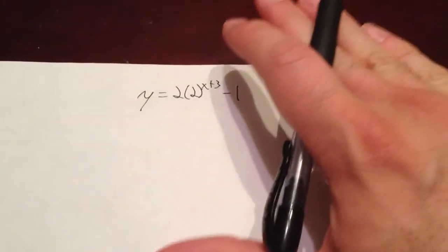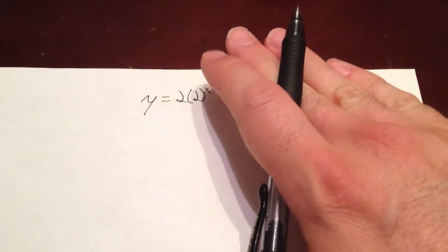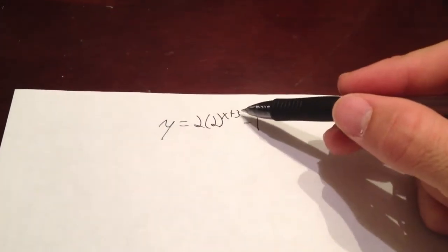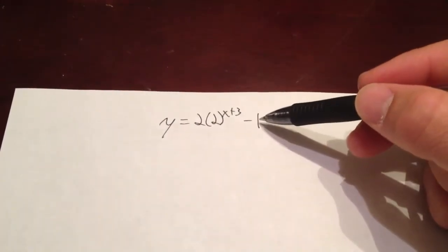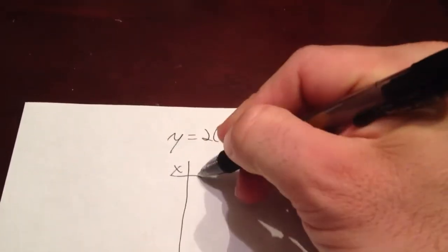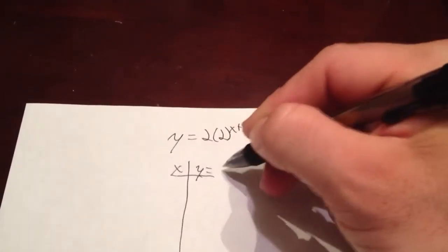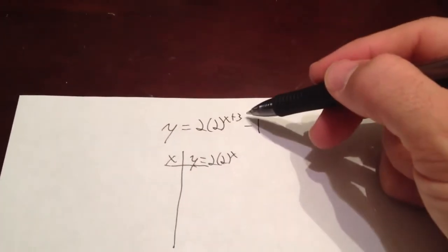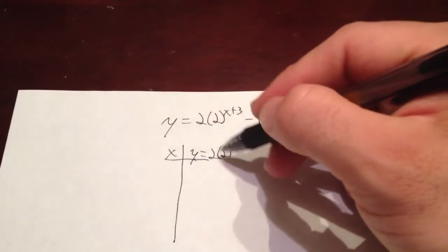Remember what I told you guys in class was to ignore the plus 3 and the minus 1 part, because when you ignore the plus 3 and the minus 1, this right here and this right here are going to move our parent function, and we're going to focus in on making a table of values only for the 2 times 2 to the x power. So, we're going to ignore the plus 3 and the minus 1, and we're just going to focus in on this.